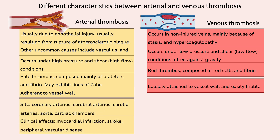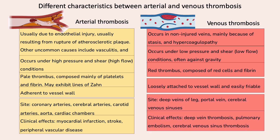The major sites of arterial thrombosis are the coronary artery, which can lead to myocardial infarction, and cerebral arteries, which lead to stroke. Other common sites include the carotid arteries, aorta, and cardiac chambers. Venous thrombosis has a predilection for the deep veins of the leg, which can lead to pulmonary embolism. Other unusual sites include the portal vein and cerebral venous sinuses.